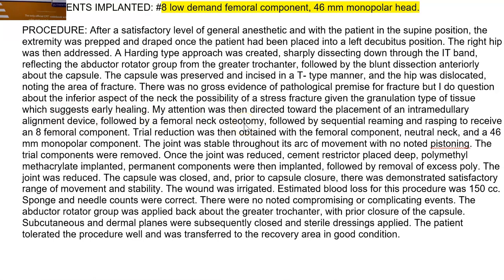...attention was then directed toward the placement of an intramedullary alignment device, followed by femoral neck osteotomy, followed by sequential reaming and rasping to receive a number eight femoral component. Trial reduction was then obtained with the femoral component, neutral neck, and a 46 mm monopolar component. The joint was stable throughout its arc of movement with no noted pistoning, so the trial components were removed. Once the joint was reduced, a cement restrictor was placed deep, polymethylmethacrylate implanted, and permanent components were then implanted, followed by removal of excess poly.